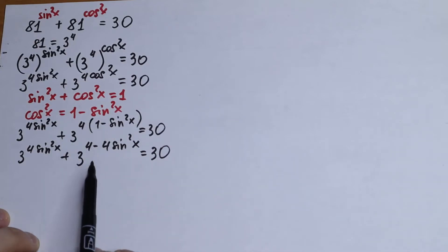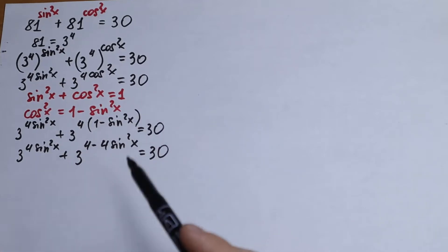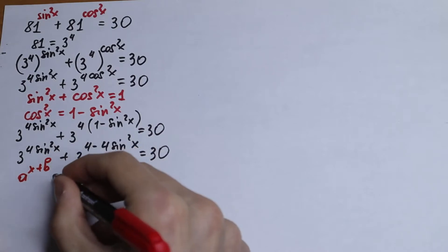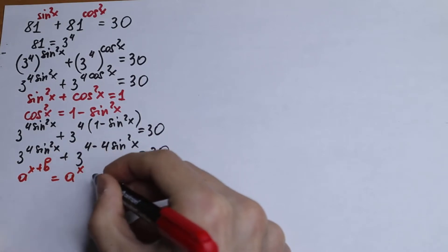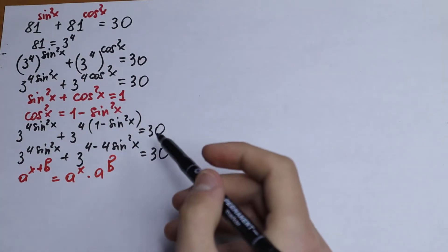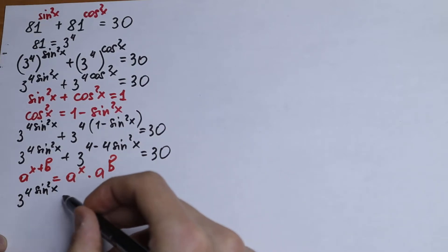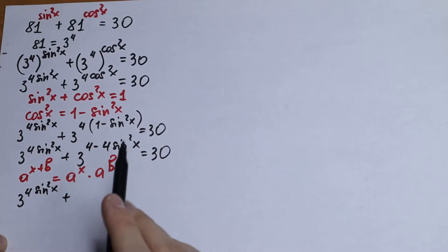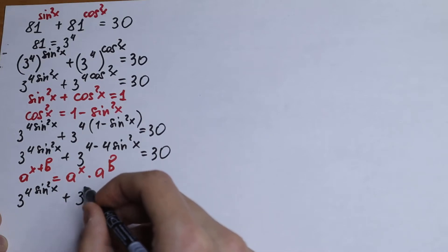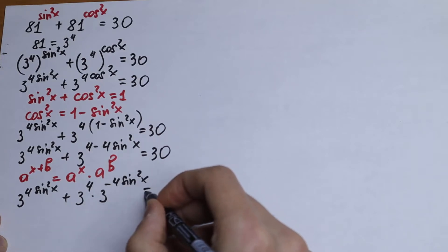We know that if we have a to the power (x + b), we can write it as a to the power x, times a to the power b. Let's use this rule: we write 3 to the power (4 − 4sin²x) as 3 to the power 4, times 3 to the power (−4sin²x).